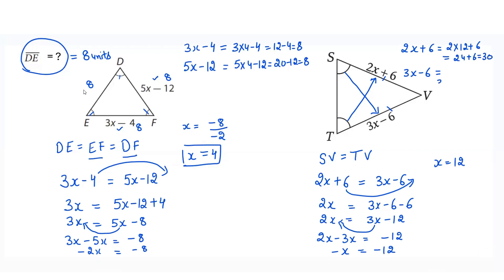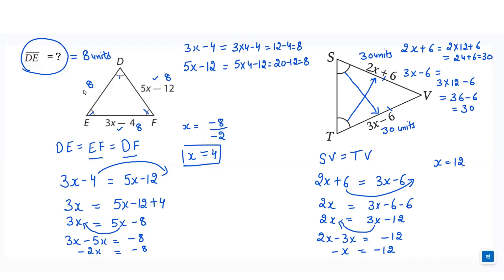Putting x into the equations: 2 times 12 plus 6 equals 24 plus 6 equals 30. And 3 times 12 minus 6 equals 36 minus 6 equals 30. So both side lengths are 30 units. This is how you can find the side length of equilateral as well as isosceles triangles. I hope you understood. Do not forget to write a comment and subscribe to my channel. Thanks for watching.